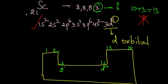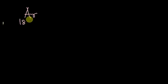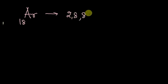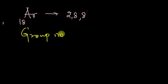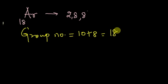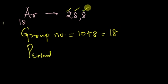Now let us find the position of argon with electronic configuration 2, 8, 8. The number of valence electrons is 8, and according to the rule, the group number would be 10 plus 8 equals 18. For the period, we look at the number of shells — in this case, three shells — so argon belongs to the third period.